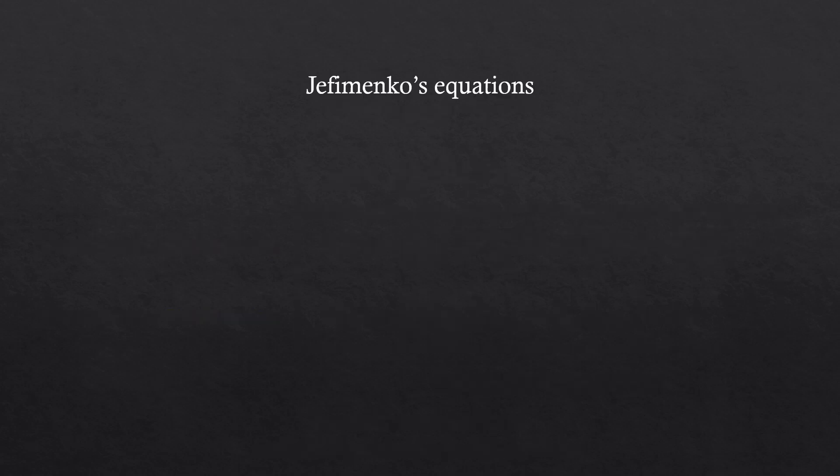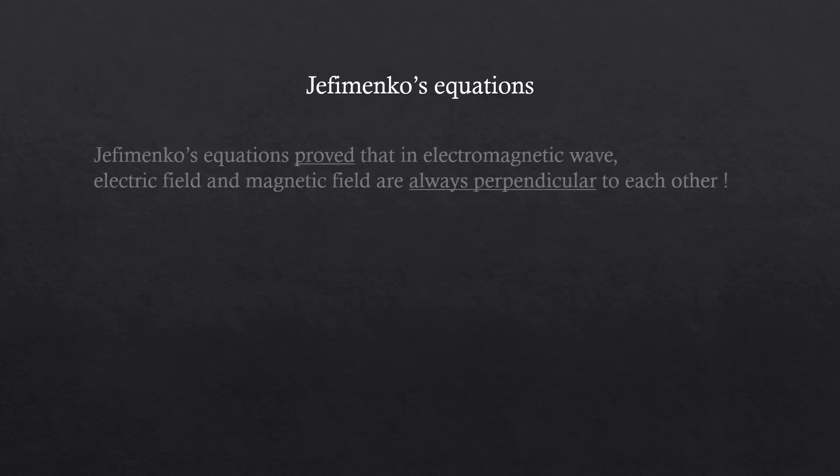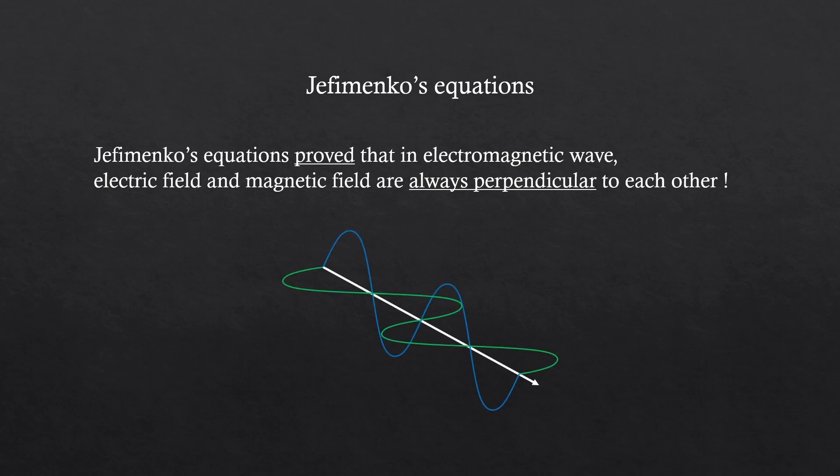But did this help us to find anything in physics? Yes. Jefimenko's equations basically prove that in electromagnetic wave, electric field and magnetic fields are always perpendicular to each other. Oh, you already knew this, eh? Well, this wasn't an obvious thing in the past. So, yeah. I'll make another video to show how Jefimenko's equations prove this orthogonality between the electric field and the magnetic field. I hope you liked my detailed explanations and please like and subscribe to my channel. It motivates me a lot. Bye.